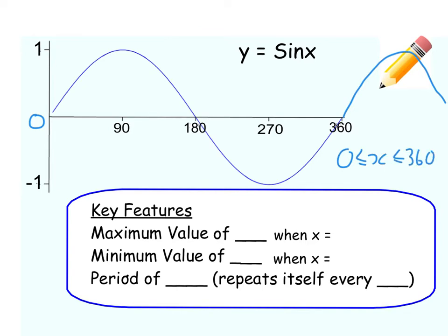This is what's called one complete wave of this graph. The maximum value of the graph is 1, because that is the highest number it goes to, and that happens when x equals 90. So that point is your maximum value — that's the highest turning point. It's got a minimum value of negative 1, and that's when x equals 270.